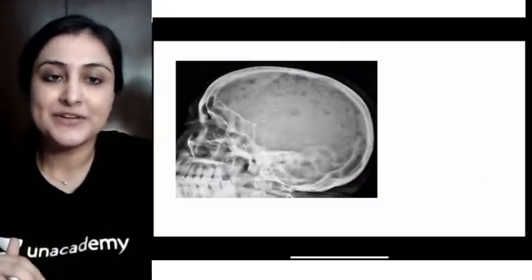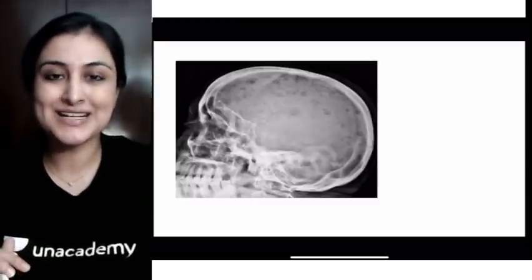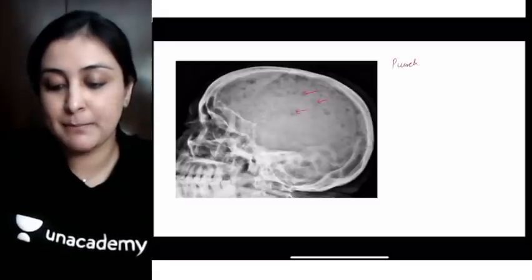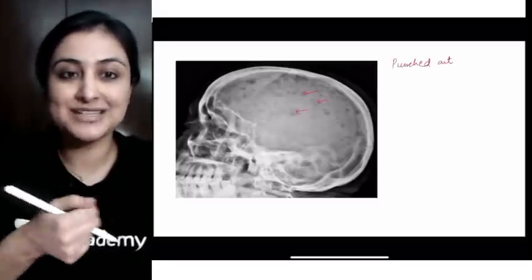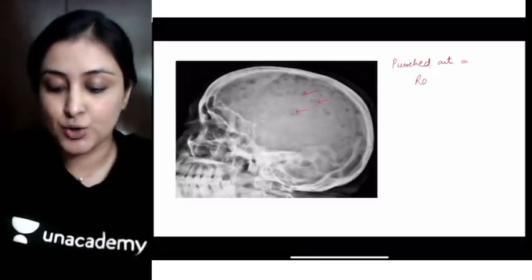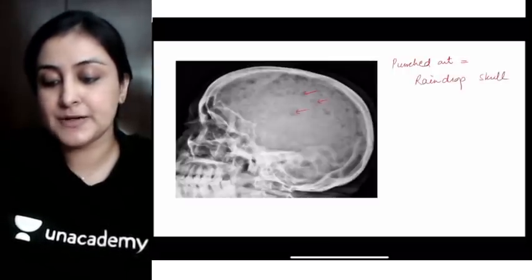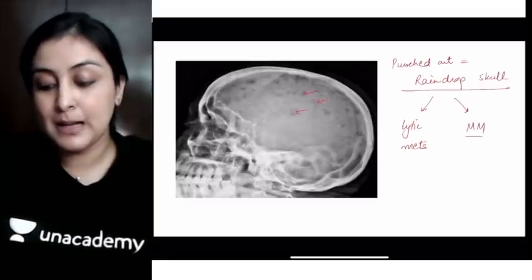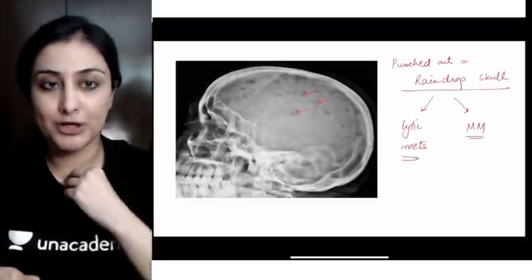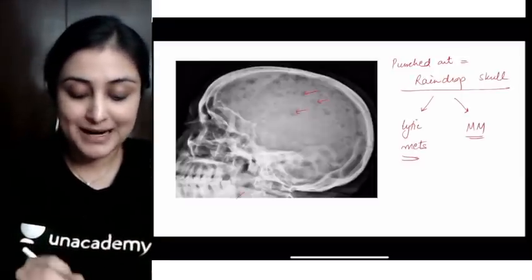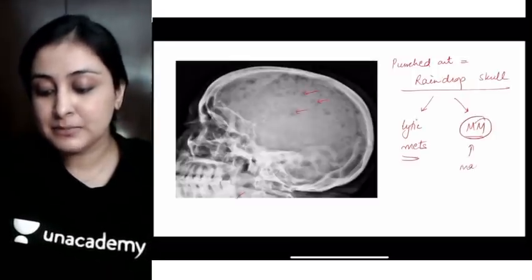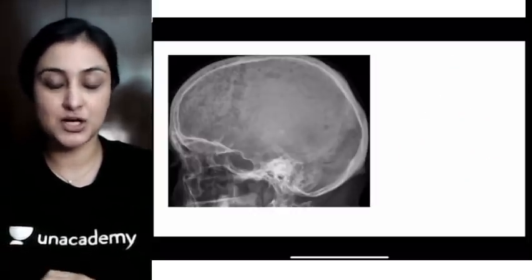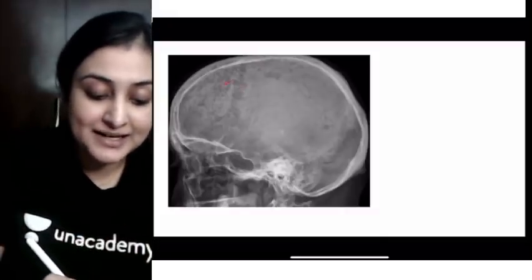Skull X-rays are very important and you'll usually see at least one of them in your exam. This lateral skull radiograph shows multifocal lytic lesions of various sizes. This has been described as 'punched out' — as if somebody has punched holes in the skull. These punched-out lytic lesions are also called the 'raindrop skull' appearance. This can be seen with various lytic metastases or with multiple myeloma. If lesions are present in the mandible on the radiograph, it favors multiple myeloma over lytic metastases.